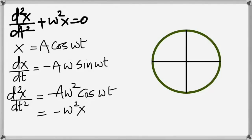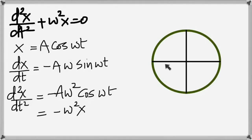What happens as the object goes from one side to the other? The projection goes from one end of the diameter right up to the other end. By the time the object makes one full rotation, the projection has made one complete oscillation.